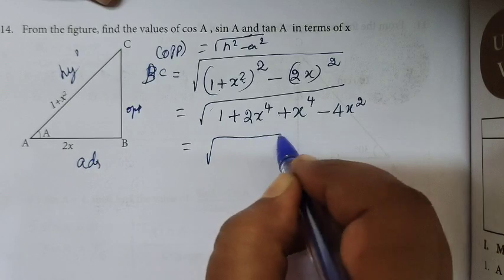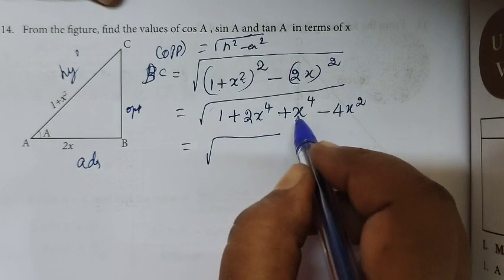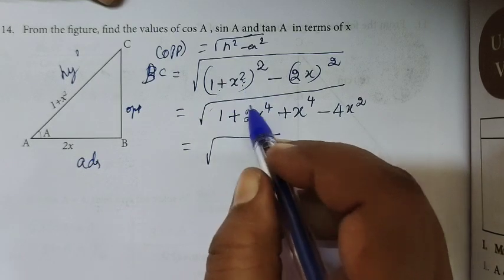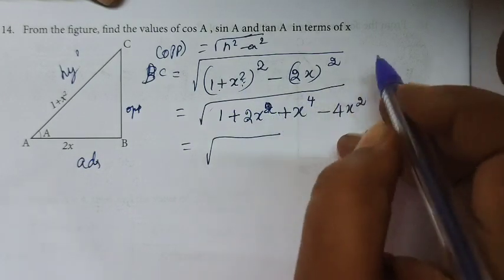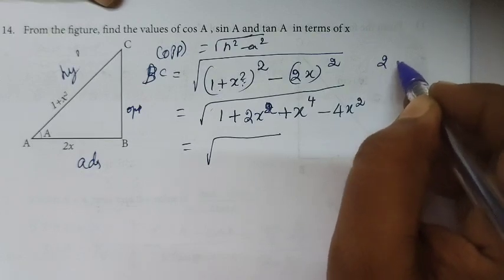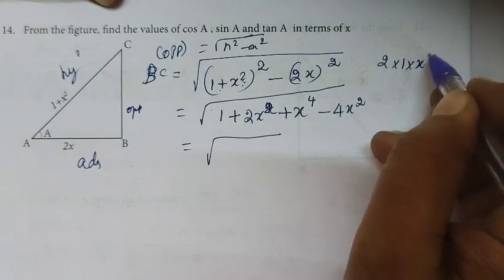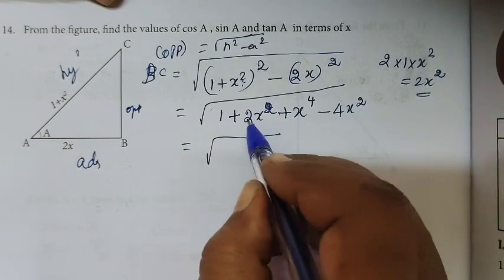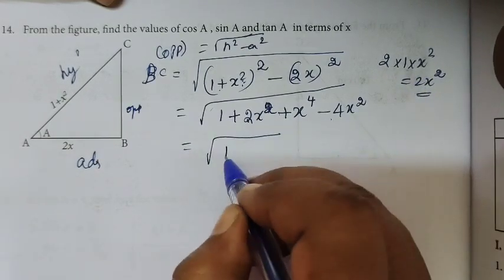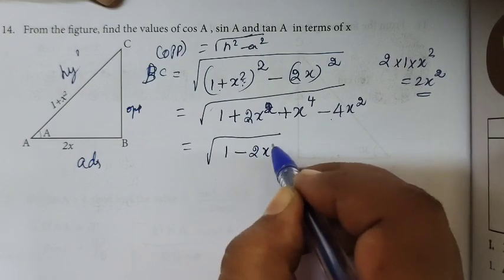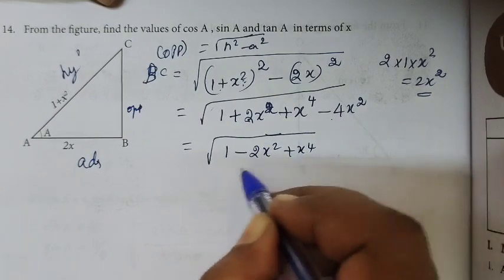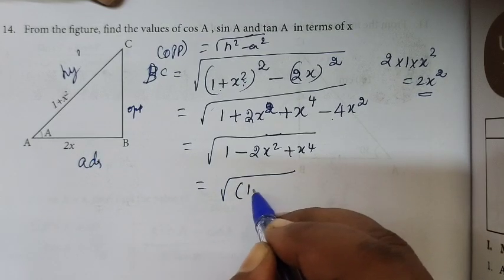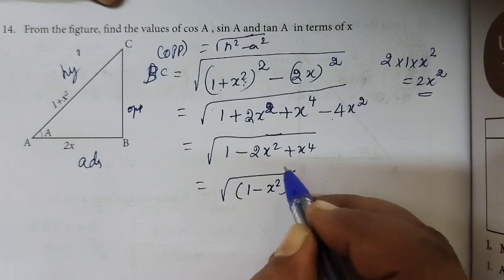So BC equals root of (1 plus x²) squared minus (2x) squared. Expanding (1 plus x²)² using a plus b whole squared equals a² plus 2ab plus b², we get 1 plus 2x² plus x⁴ minus 4x². So that gives us x⁴ minus 2x² plus 1.